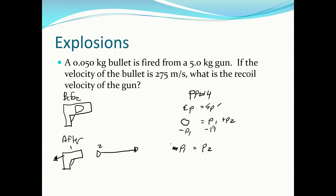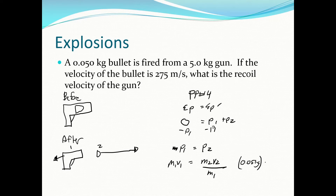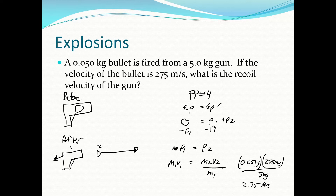For explosions, the initial momentum is zero, so M1V1 = M2V2 (equal and opposite). We want the recoil velocity of the gun. The bullet is M2 = 0.05 kg at 275 m/s; the gun is M1 = 5 kg. So V1 = (0.05 × 275) ÷ 5 = 2.75 m/s. The direction is backwards.